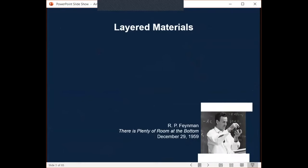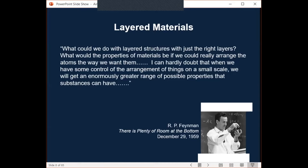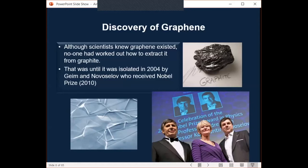So let me start. Richard Feynman received the Nobel Prize for Physics in 1959. He gave the famous lecture at Caltech, there's plenty of room at the bottom. In that lecture, he said the following, what could we do with layer structures with just right layers? What would the properties of materials be if it could really arrange the atoms the way we want them? I can hardly doubt that when you have some control of the arrangement of things on a small scale, we'll get an enormously greater range of possible properties that substances can have.